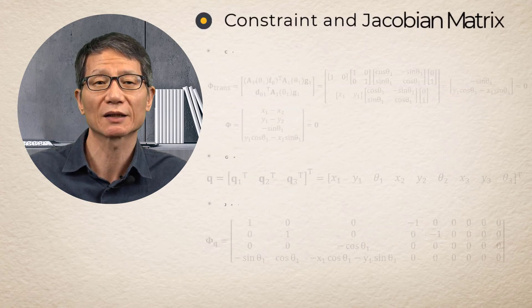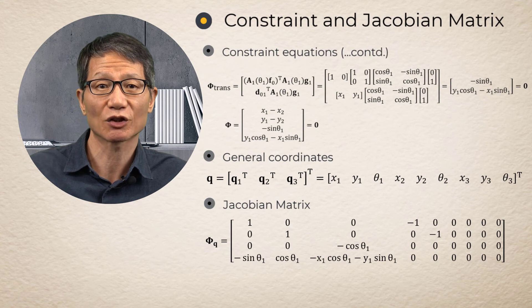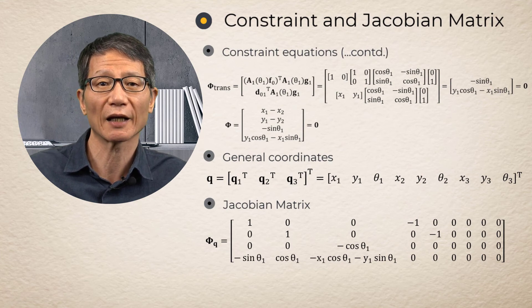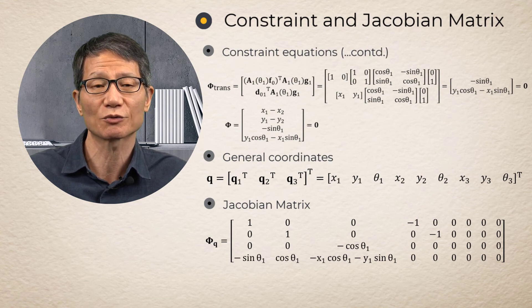Constraint and Jacobian matrix. The constraints and their Jacobian matrix are obtained as in this equation of the rigid body model.